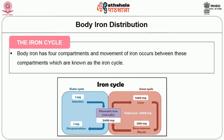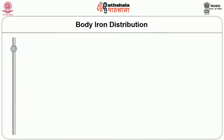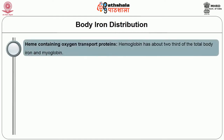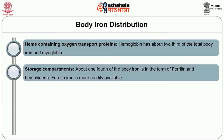Body iron has four compartments and movement of iron occurs between these compartments — this is known as the iron cycle. The first compartment is the heme-containing oxygen transport proteins. Hemoglobin contains about two-thirds of the total body iron, and also myoglobin. The second is the storage compartment, where about one-fourth of body iron is in the form of ferritin, which is more readily available than hemosiderin.